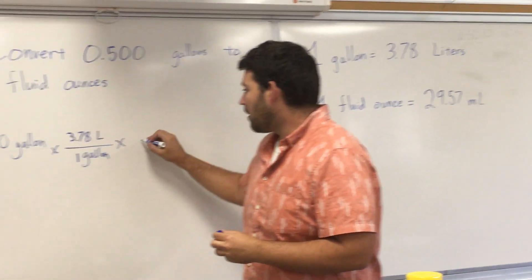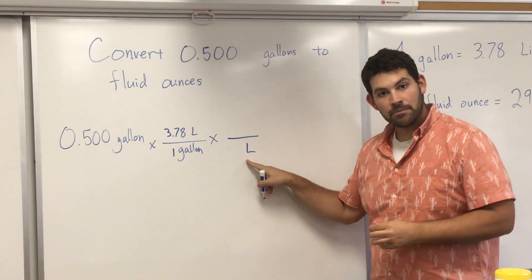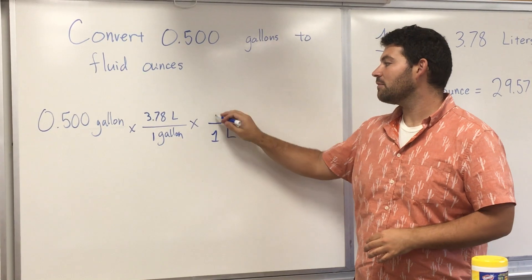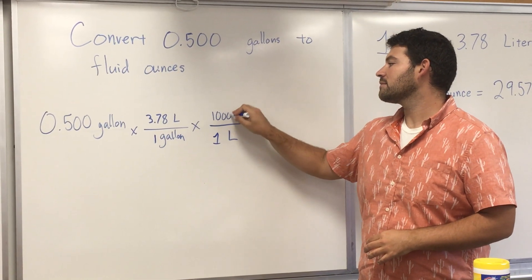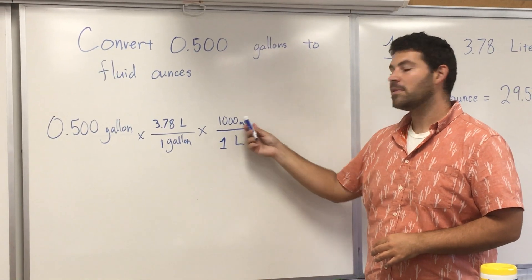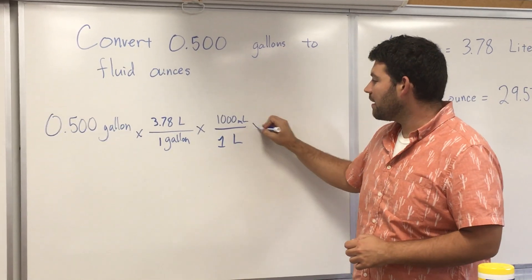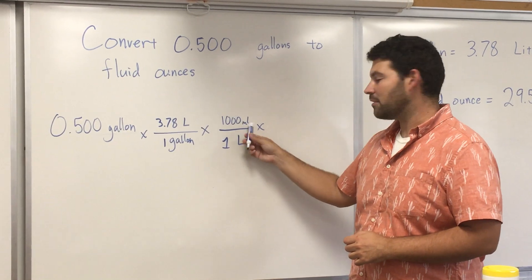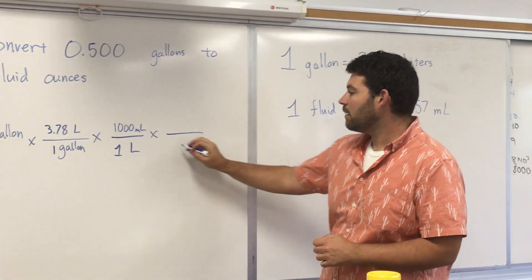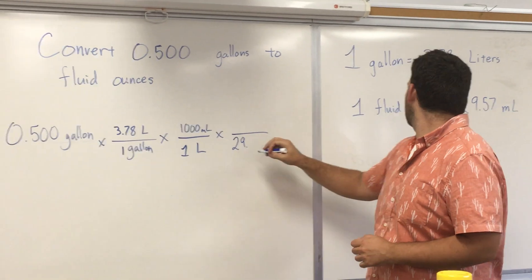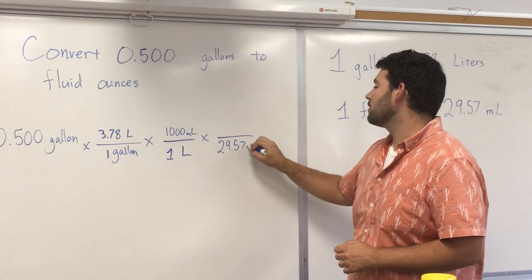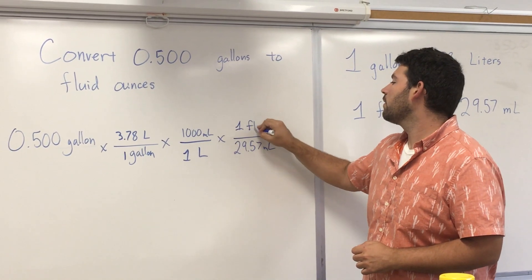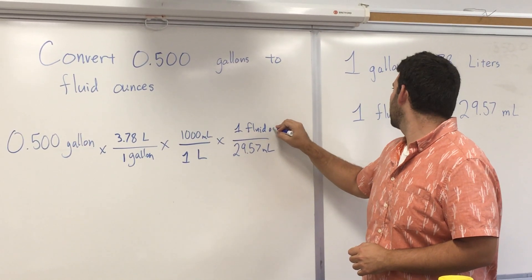Now I'm going to put the liter on the bottom so that it'll also cancel out. One liter is equivalent to 1,000 milliliters. And then these will cancel out. My liter unit will cancel out. I still have the milliliter. In my last step, I'm going to put the 29.57 milliliters, and that's equivalent to 1 fluid ounce.